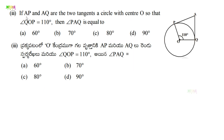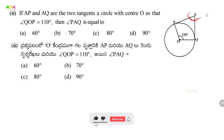Next, third problem: If AP and AQ are the two tangents to a circle with center O, and angle QOP = 110°, then find angle PAQ. We need to find how many degrees angle PAQ is — options are 60°, 70°, 80°, or 90°.